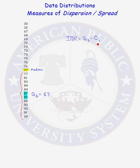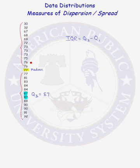Now we need to find Q1. Q1 is the median of the observations less than the median of the data set. There are 12 observations below the median — that's an even number — so the median of those 12 numbers will be the average of the two middle numbers. The two middle numbers are 72 and 73, so Q1 is the average of those two numbers, which is 72.5.